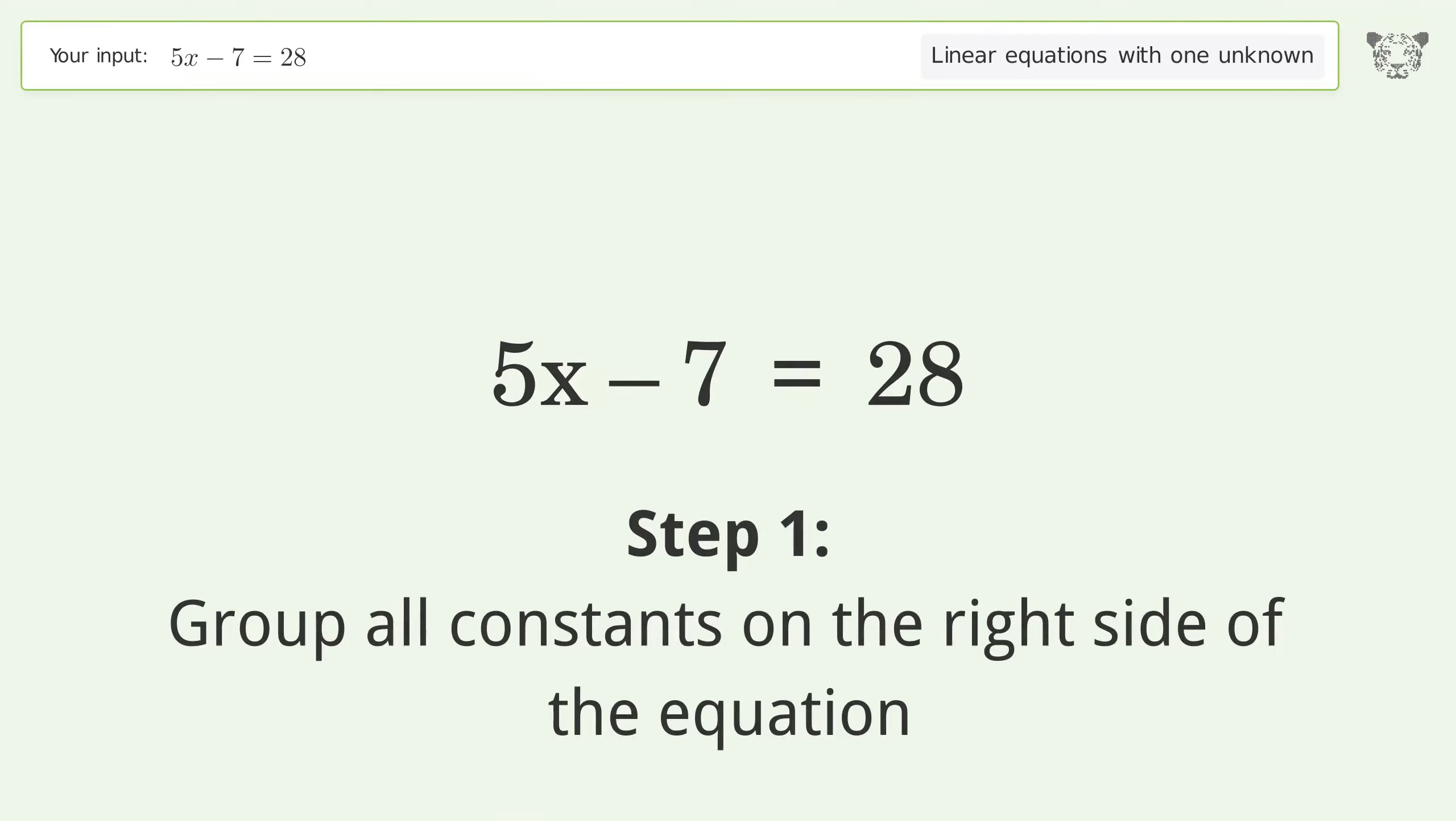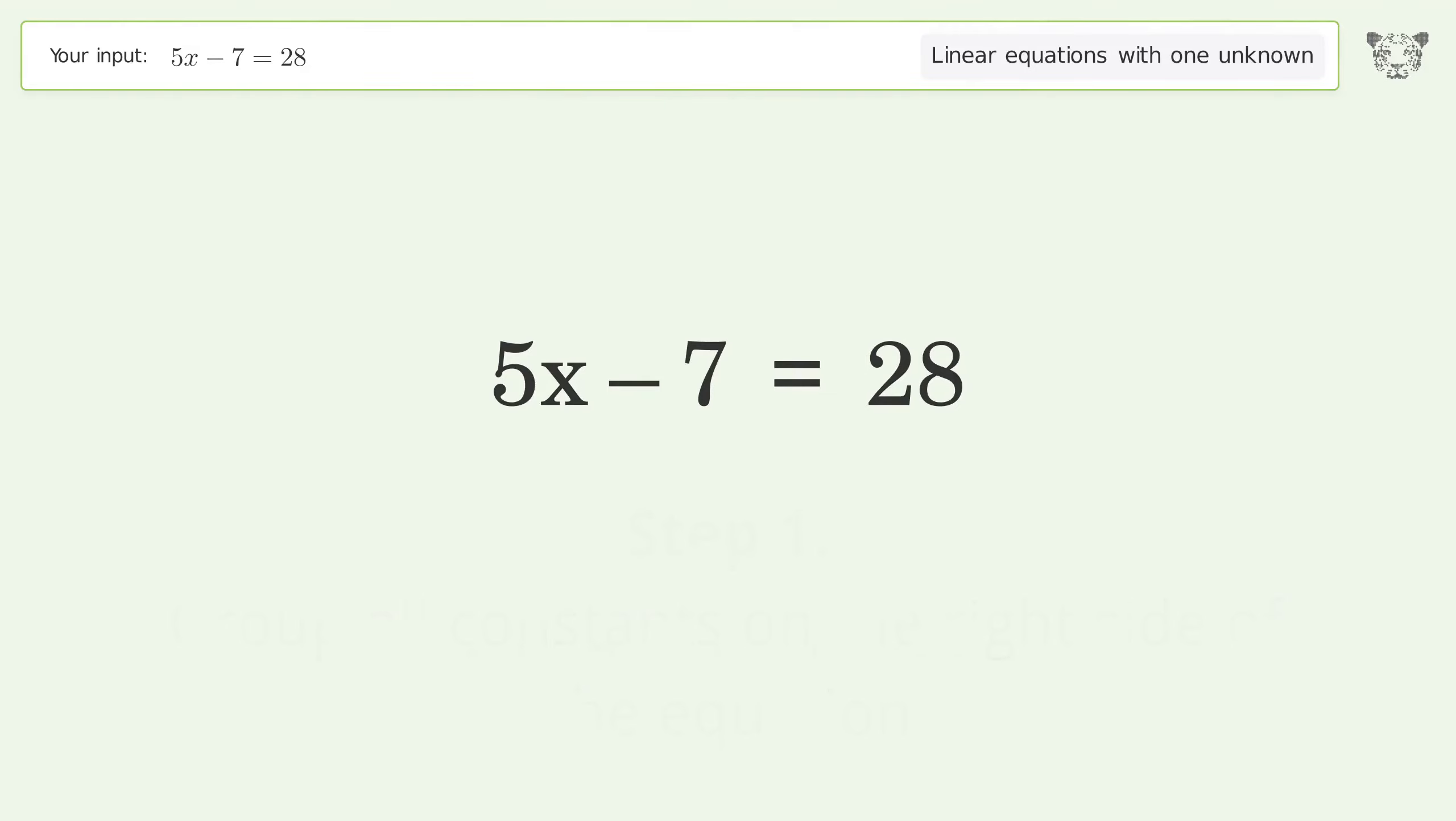Group all constants on the right side of the equation. Add 7 to both sides. Simplify the arithmetic.